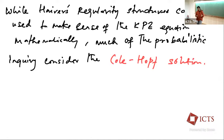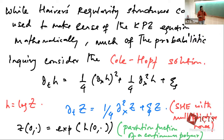There have been a lot of developments in trying to make sense of this, in particular via paracontrolled structures. But much of the probabilistic analysis actually focuses on what is known as the Cole-Hopf solution. So if you think of H as log of Z, then Z actually satisfies a linear stochastic PDE — the stochastic heat equation with multiplicative noise — and then you can formally take the log and see that if Z satisfies this, then formally H satisfies the KPZ equation. Z actually has a probabilistic interpretation as the partition function of some continuum polymer models.